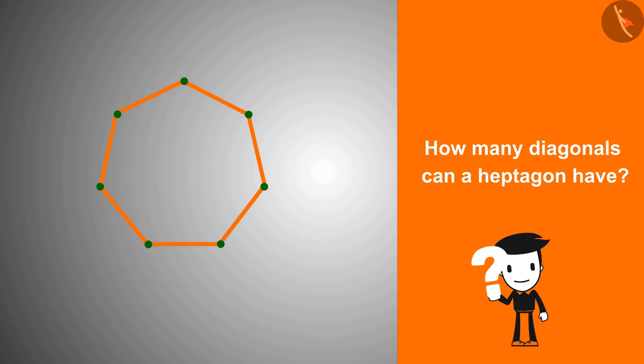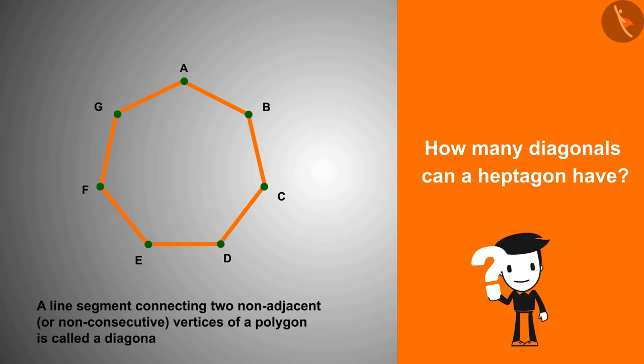Let us first name this heptagon. We know that the line segments connecting any two vertices of a polygon except adjacent vertices are called diagonals.